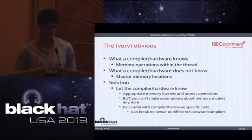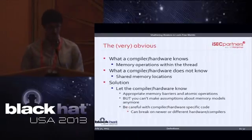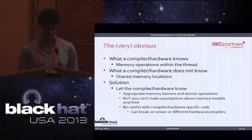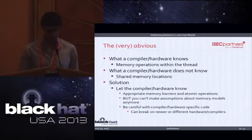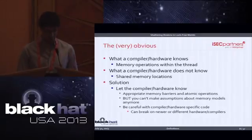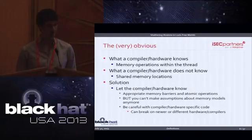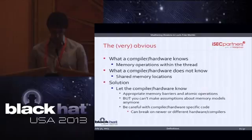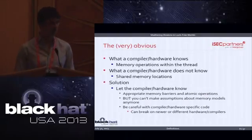So let's start with the very obvious: what does the compiler and hardware know when compiling or executing code? They just know what's going on within a single thread, and they obviously don't know about any memory location that could be shared across threads. You have to let the compiler and the hardware know, but you can't make assumptions about memory models anymore — like thinking the CPU doesn't do anything that can break this, so it's okay.